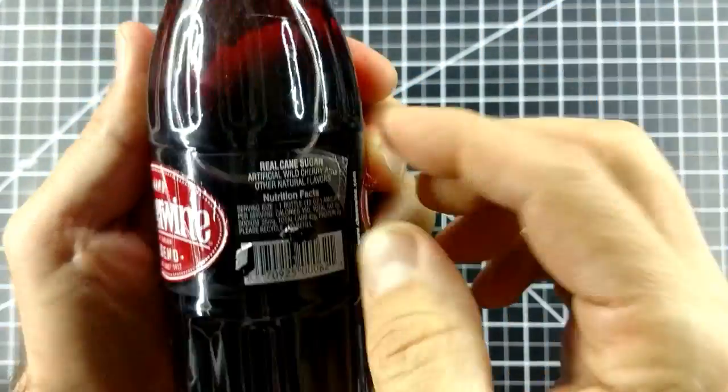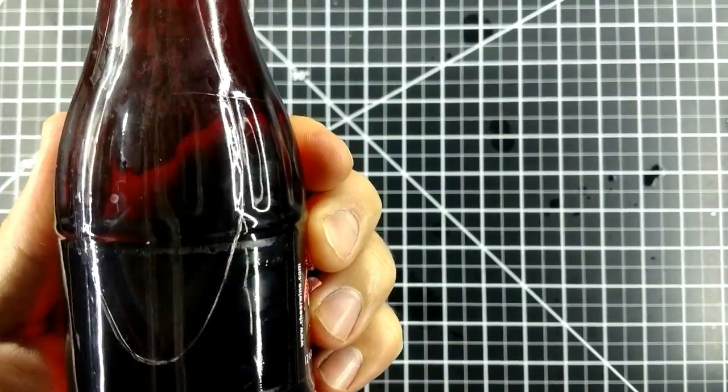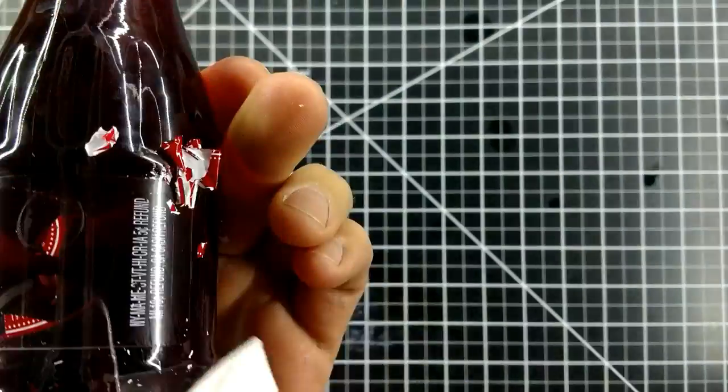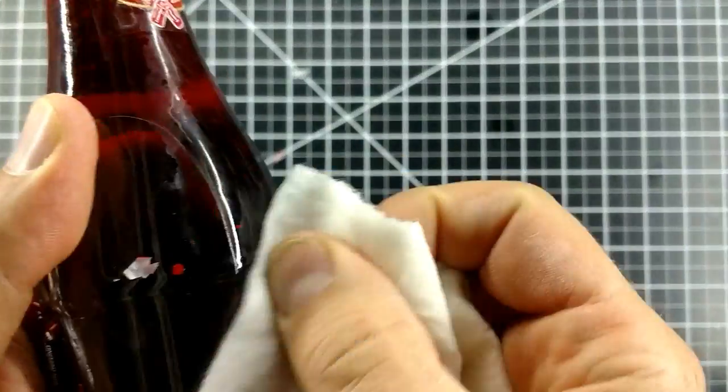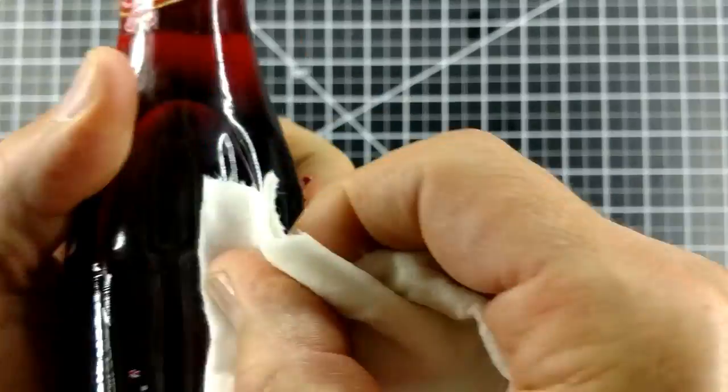Next, I do the plastic label. Still a bit tough to get started, but also takes most of the glue off with it. But notice how the paint is separating from the label. Gets a bit messy, but the glue cleans off well.